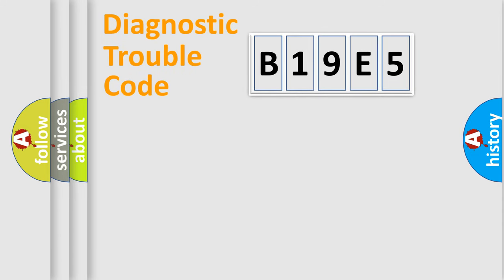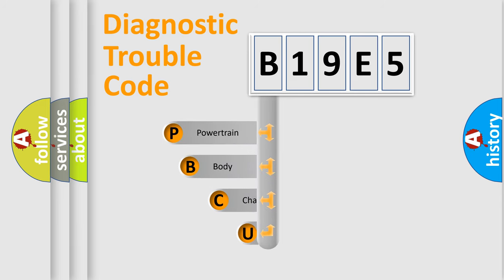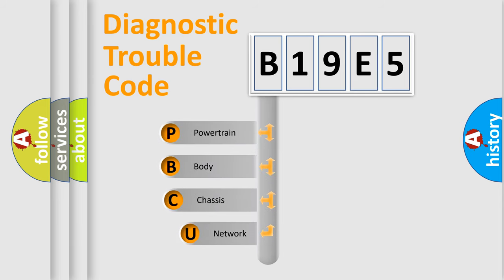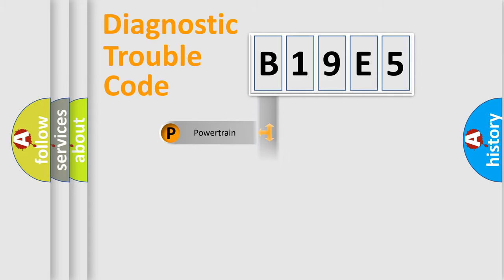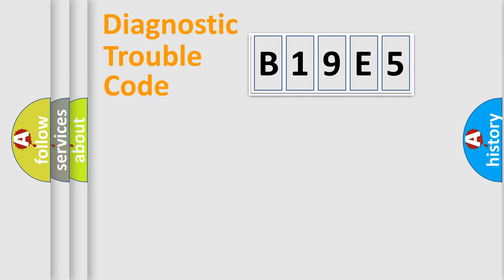Let's do this. First, let's look at the history of diagnostic fault code composition according to the OBD2 protocol, which is unified for all automakers since 2000. We divide the electric system of an automobile into four basic units: Powertrain, Body, Chassis, and Network.